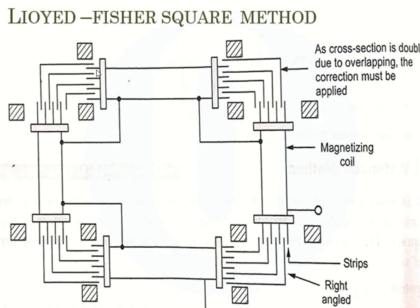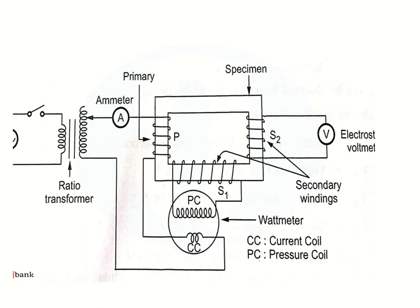This is the complete circuit of the Lloyd-Fisher square. The main parts are: four strips, each arranged one in the direction of rolling and another perpendicular to the direction of rolling. There are magnetizing windings connected in series forming the primary winding. Below the magnetizing winding there are two layers of coil forming two secondary windings S1 and S2. A right-angled iron core piece is inserted between the strips to form a complete closed magnetic circuit.